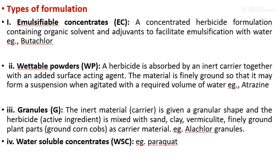Third is granules: inert material given a granular shape with the herbicide active ingredient mixed with sand, clay, vermiculite, or ground plant parts like ground corn cobs as carrier material. Example: alachlor. Fourth is water-soluble concentrate: chemicals that are soluble in water. Example: paraquat. These are the types of formulation of herbicide. Thank you.